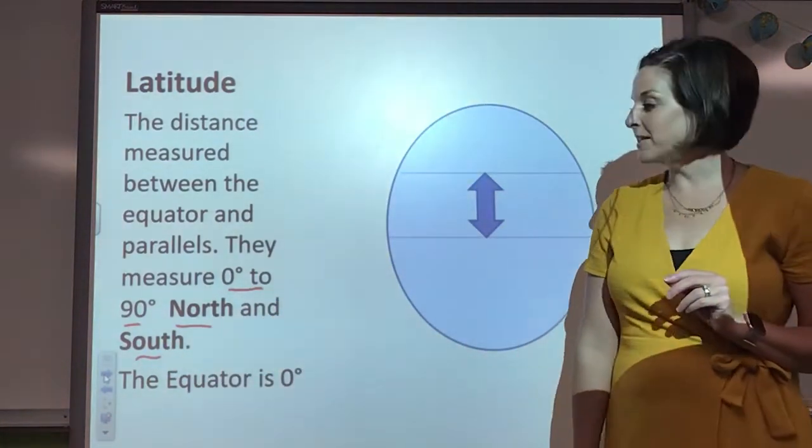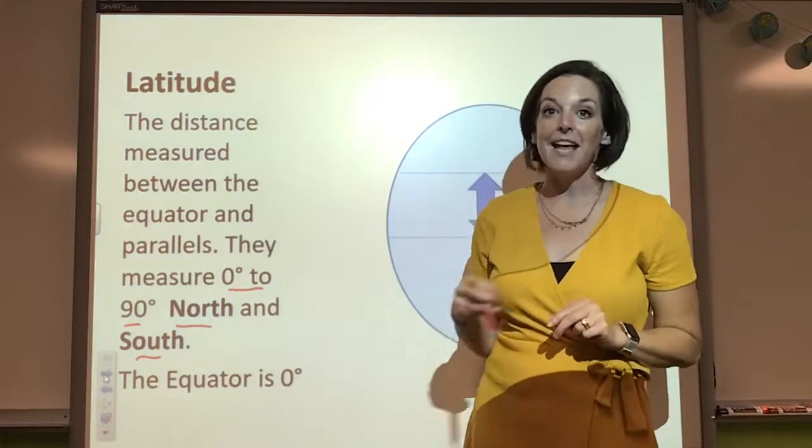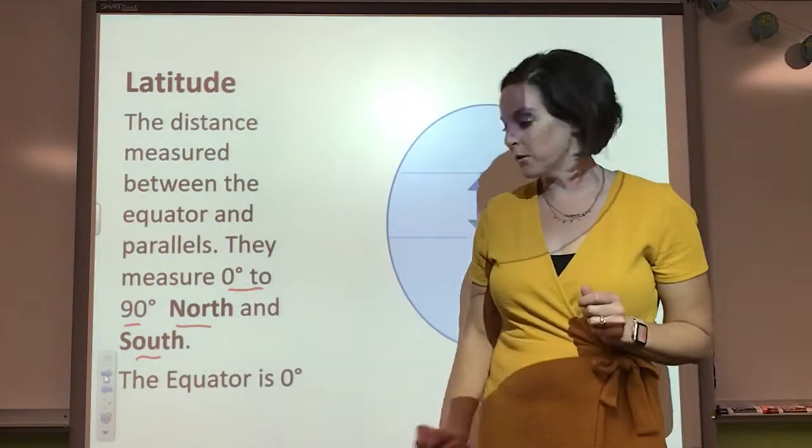So again, the key here that you need to know, zero degrees to 90 degrees north and south. North and south. And again, the equator is the line of latitude, the parallel line at zero degrees.